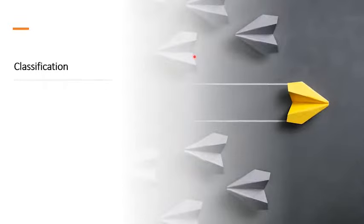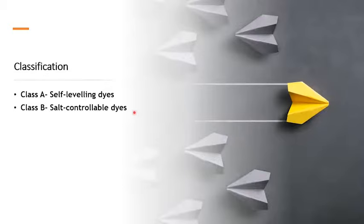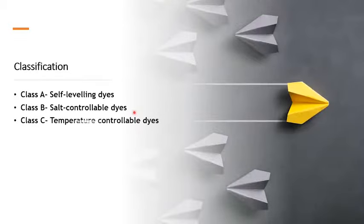Direct dyes are classified into Class A, B, and C. Class A are self-leveling dyes — they don't require any salt, hot temperature, or controlled environment to achieve a level shade. Class B dyes are salt-controllable dyes, meaning we can control dyeing behavior using salt; Class B direct dyes are sensitive to salt addition. Class C dyes are temperature-controllable dyes — leveling can be achieved by controlling the temperature.